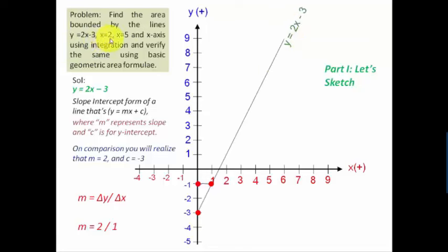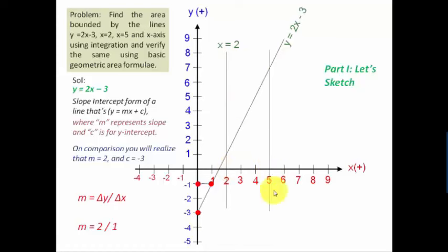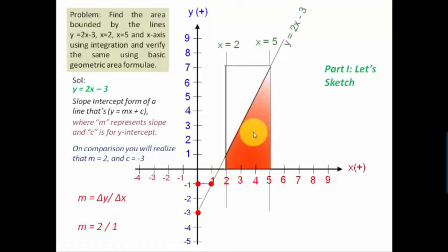Now let's plot x equals 2 and x equals 5. x equals 0 is the y-axis, x equals 1 is a vertical line through point 1, so x equals 2 and x equals 5 are vertical lines passing through points 2 and 5 respectively. You can now clearly see the region bounded by the line y equals 2x minus 3, the lines x equals 2, x equals 5, and the x-axis. Let's color that region — this is the area we need to calculate using integration.